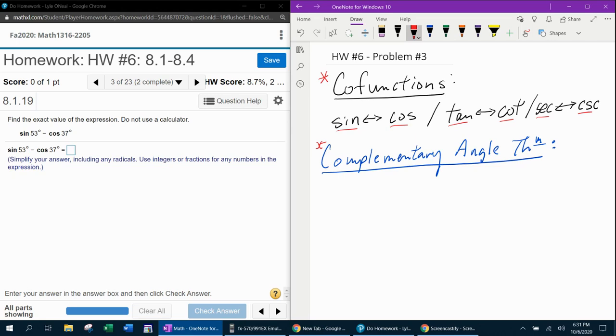The complementary angle theorem says that sine of theta is the same as cosine of 90 minus theta. So if you're taking, let's say, the sine of 30 degrees, that would be equal to the cosine of 90 minus 30, which is cosine of 60.